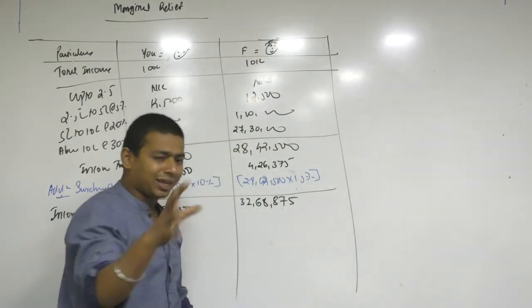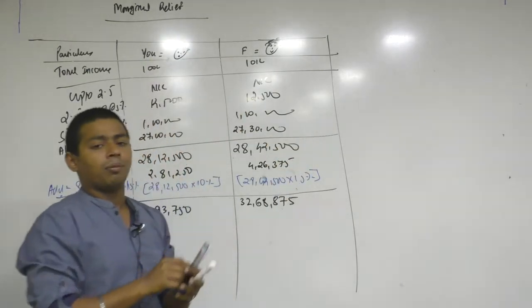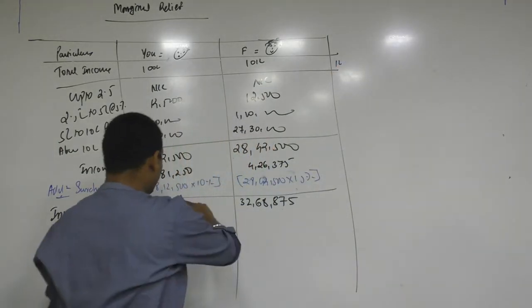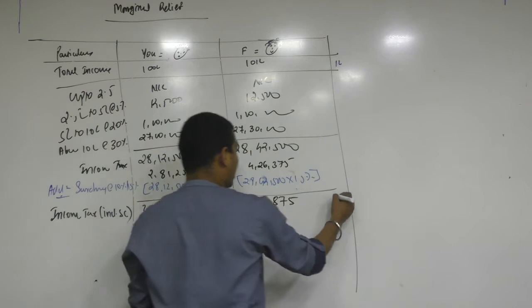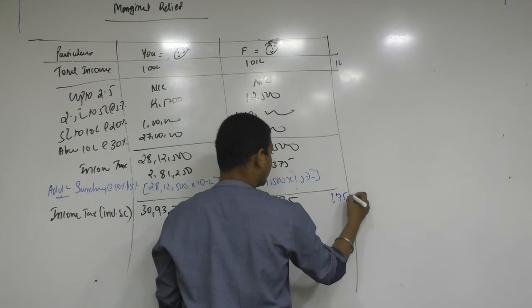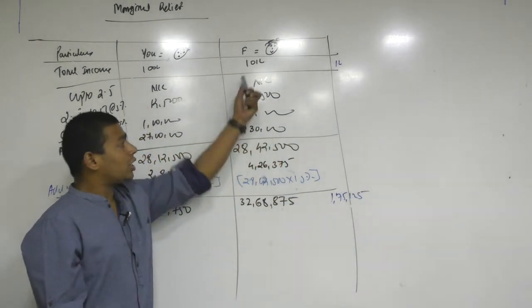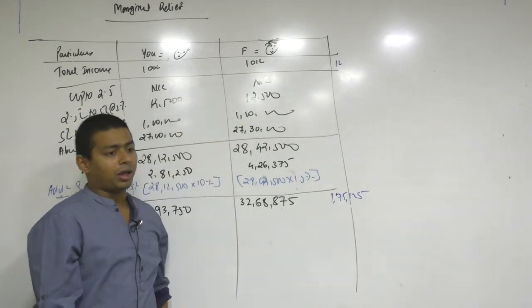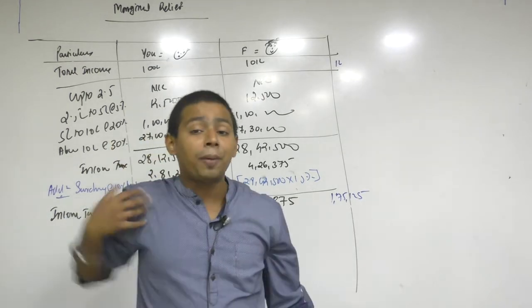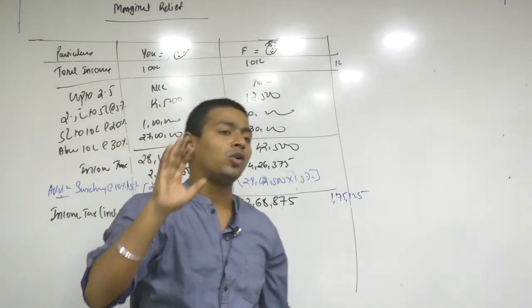Okay. Let's follow something similar to differential costing here. Here can you tell me incremental income? 1 lakh. My incremental income is only 1 lakh. But my incremental tax? 1 lakh, 75,000? 1,25,000. You tell me. Will it hurt? Yes. Will it hurt your friend? He is earning extra 1 lakh. But he is paying 1,25,000. How much extra pain he is taking? 1,25,000. That much amount of relief we will give him.